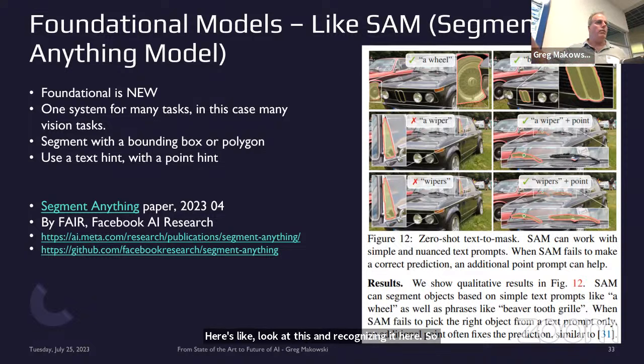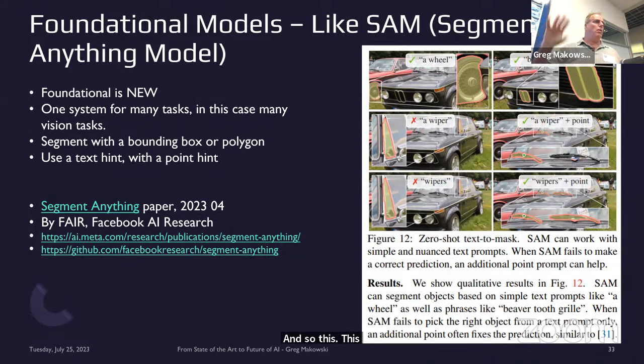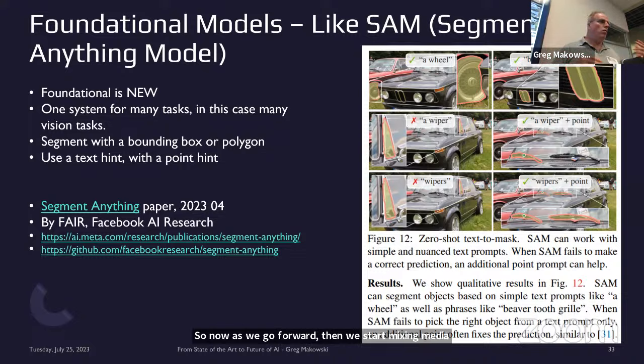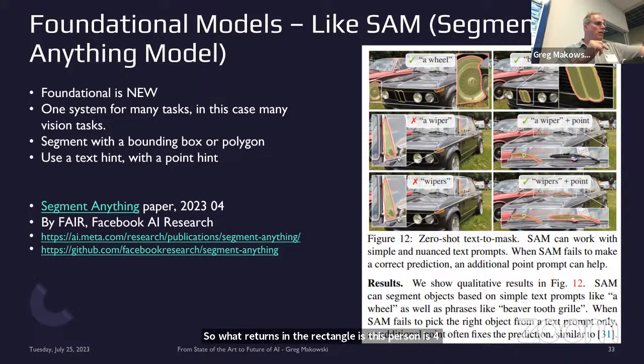This and other foundational models are doing the work of five different architectures. As we go forward, we start mixing media — RGB plus infrared and audio. Cars use LiDAR — what returns in the rectangle is that this person is four meters away, the next person is 4.2 meters, that chair is 3.8 meters. Each pixel has a distance. I'm hoping to combine different media types going into the same foundational model.